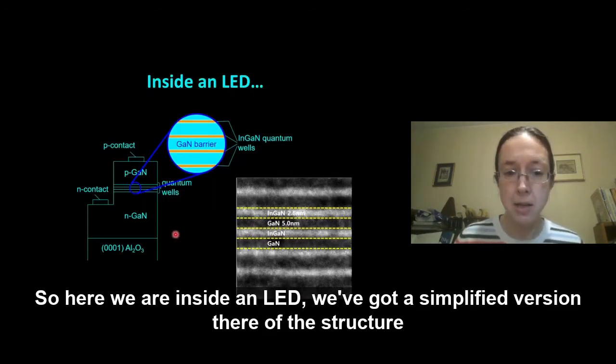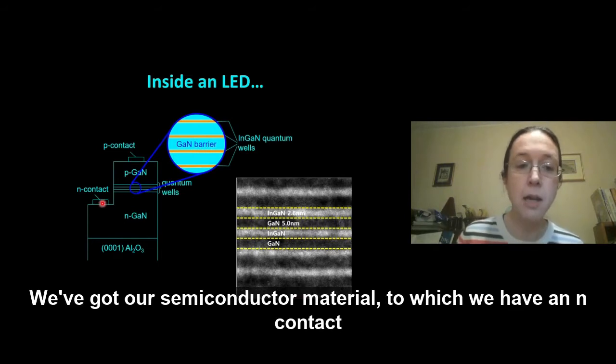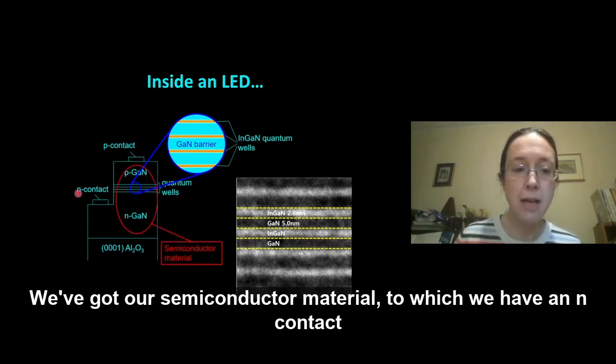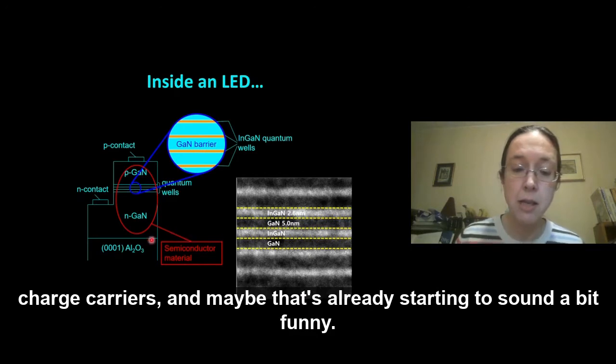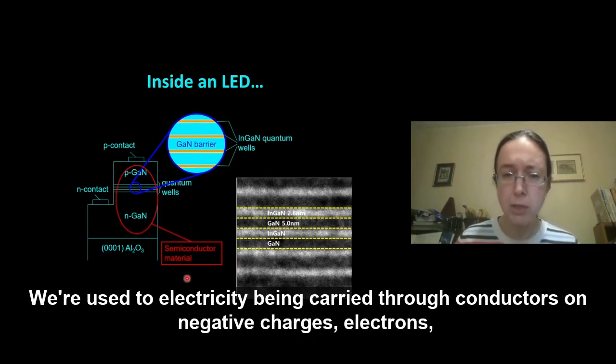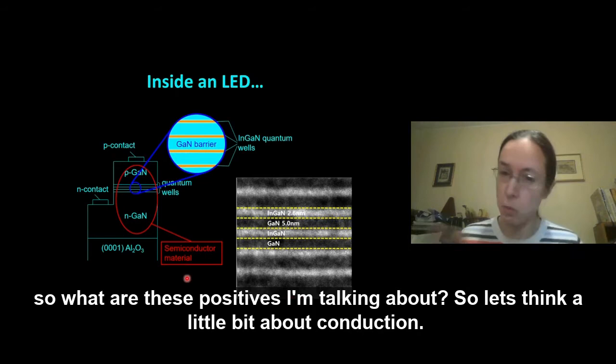So here we are inside an LED. We've got a simplified version of the structure I showed you on the last page. We've got our semiconductor material, to which we have an N contact and a P contact. We're going to use those to inject positive and negative charge carriers. Maybe that's already starting to sound a bit funny. We're used to electricity being carried through conductors by negative charges, electrons. So what are these positives I'm talking about? So let's think a little bit about conduction.